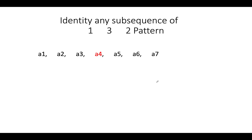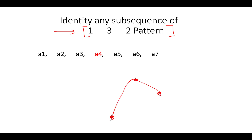Now let's understand what the question means by the 132 pattern. If we plot the three elements on a 2D plane, we'll have '1' here, '3' here, and '2' here. So we are interested in identifying three subsequence elements such that this graphical structure is formed. The first element is the least of the three, the second element is in the middle, and the third element acts as the peak of all three.